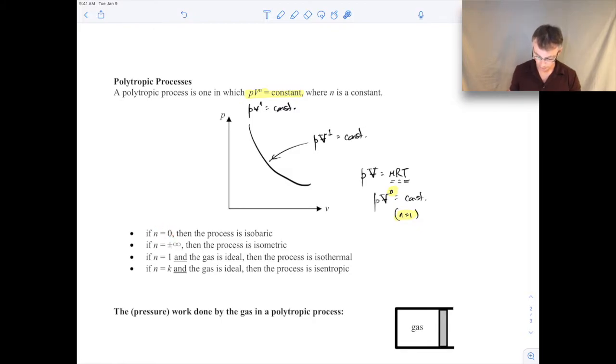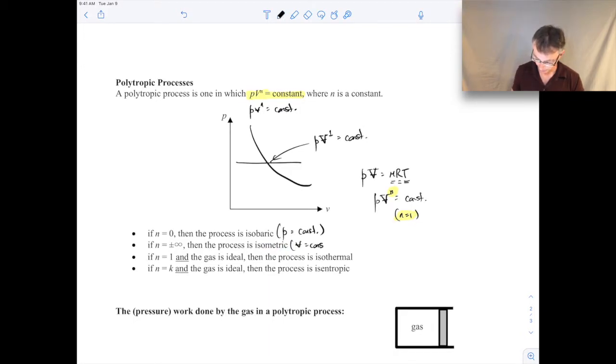So when N is equal to zero, the process is isobaric, meaning the pressure is a constant. So that would just be P is equal to a constant because V raised to the N would just be equal to one, where N is zero. So it would just be P is a constant. So on this plot it would just look like a horizontal line. If N is plus or minus infinity, then the process is isometric. That means that the specific volume or the volume is a constant. So that would be like a vertical line in that situation.